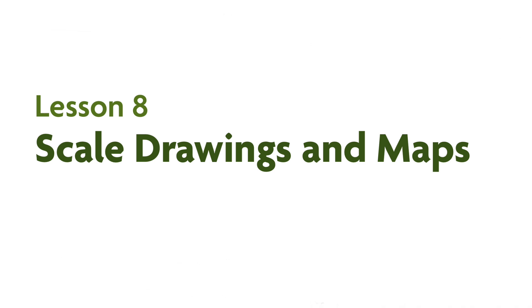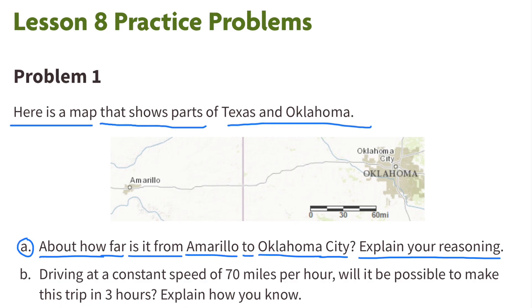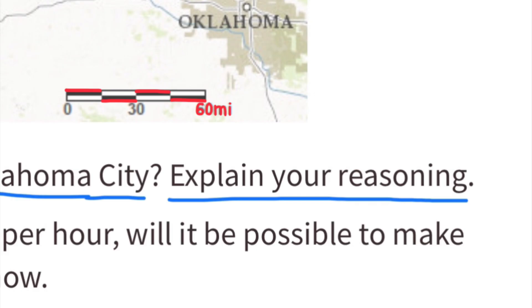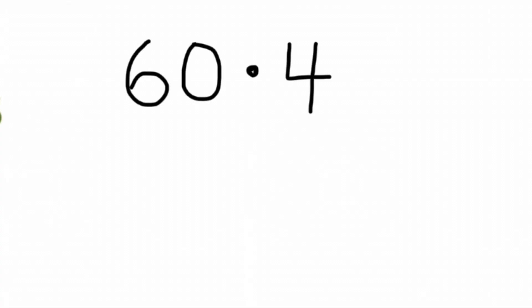7th grade unit 1, lesson 8: scale drawings and maps. Number one — here is a map that shows parts of Texas and Oklahoma. About how far is it from Amarillo to Oklahoma City? Here's the key on the map that shows the relative distance of 60 miles. We can see how many times this distance fits between Amarillo and Oklahoma City — it fits just about perfectly four times. 60 times 4 is 240.